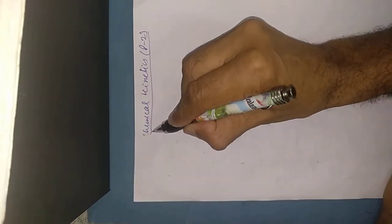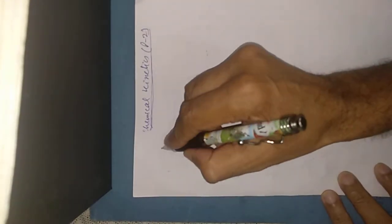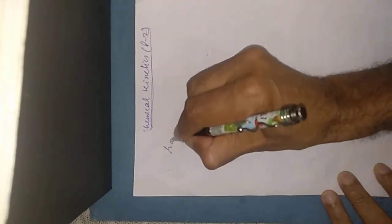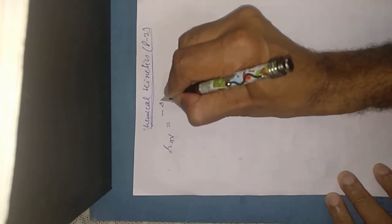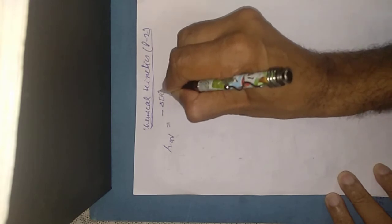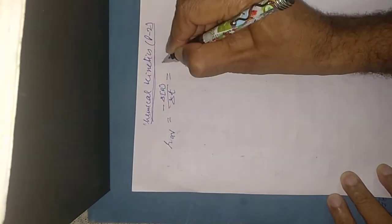Today I am starting with chemical kinetics part two. In the last lecture I told you R average equals minus change in concentration of reactant upon delta T, which can also be written as delta P upon delta T.